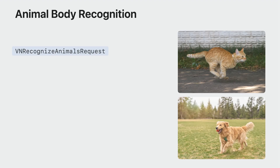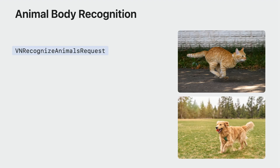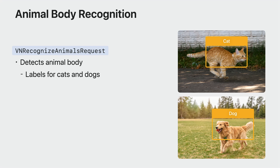Vision already has a request for animal recognition that detects and recognizes cats and dogs. The request generates a bounding box with a label for the recognized animal and a confidence level. That's a great API if you are trying to locate and identify the animal. But how about if you want to know more about the animal? It can be challenging to infer what the animal is doing. For example, when I dog sit for my neighbor, I might like to know the specific pose of my neighbor's dog when he wants a snack or needs a walk. Vision has now expanded Body Pose to animals.